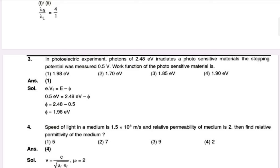For a photosensitive material, the stopping potential was measured as 0.5 volt. Work function of the photosensitive material: work done is equal to eV minus 0.5 electron volt. The energy of the photon of radiation is 0.5 electron volt, and it is equal to 1.98 electron volt.